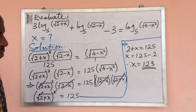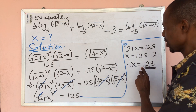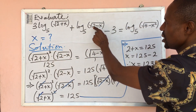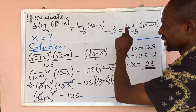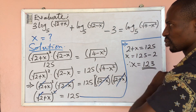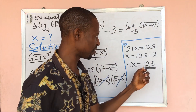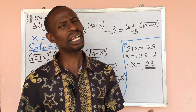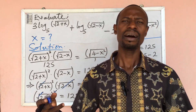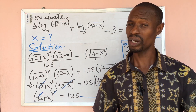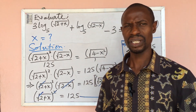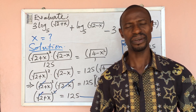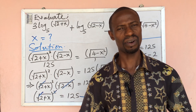That is the solution, but I have an issue with this. If you plug the value of x back into the expression, it gives us an imaginary root. In other words, this equation does not have a real root. I brought this question to see the view of other great mathematicians around the world. If you have a better solution, kindly drop it in the comment section so we can learn together. Thanks for always being there.